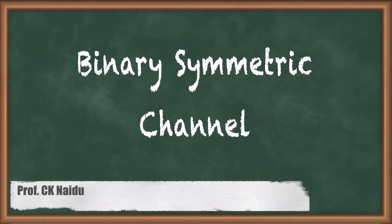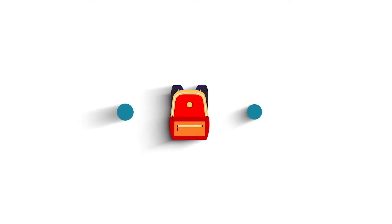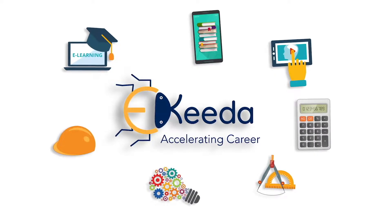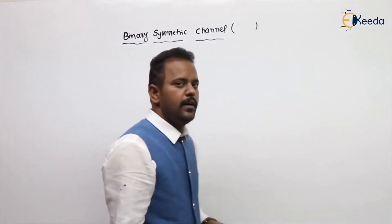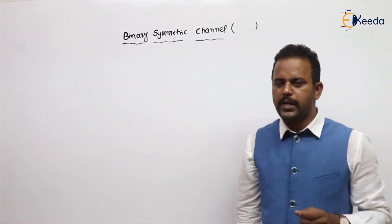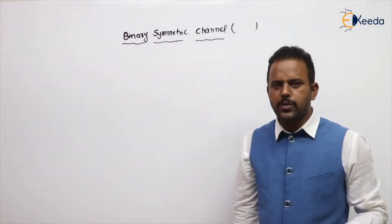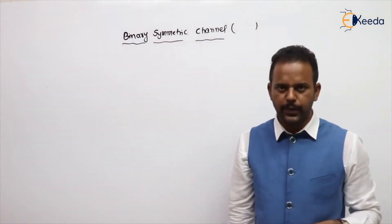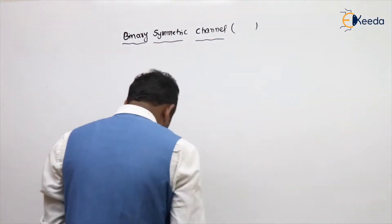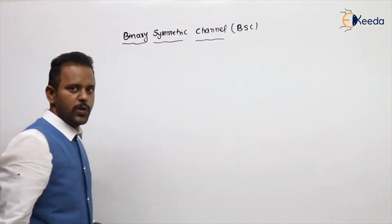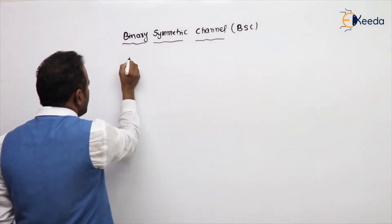Hello students. In this video we will be learning about the Binary Symmetric Channel (BSC). We are discussing the entropy of a BSC channel as well as the channel capacity of a BSC channel. Channel capacity means we take the maximum of mutual information. Binary means it is having two symbols.